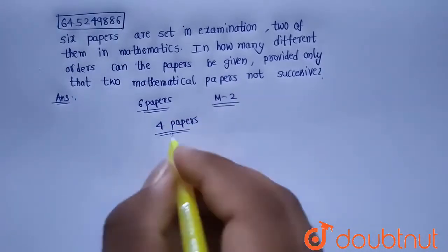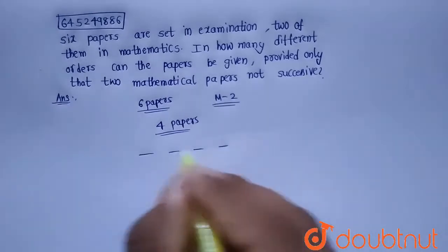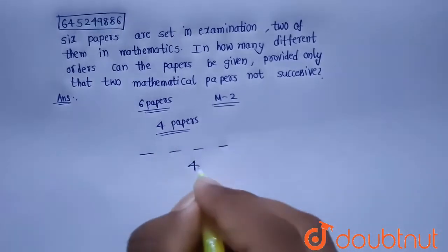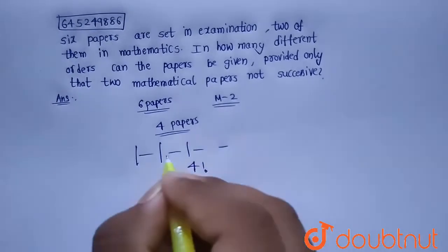So let's place the four papers in the four places. The number of ways to place these four papers in the four places is 4 factorial. And we have five gaps: one, two, three, four, five.